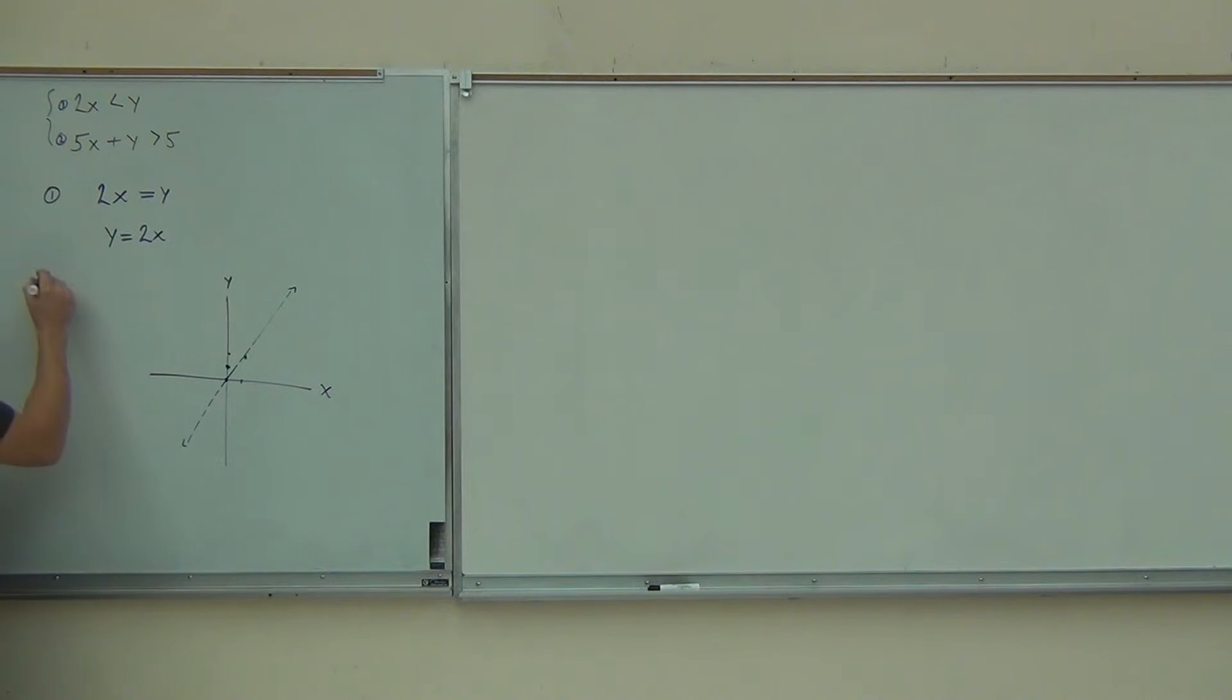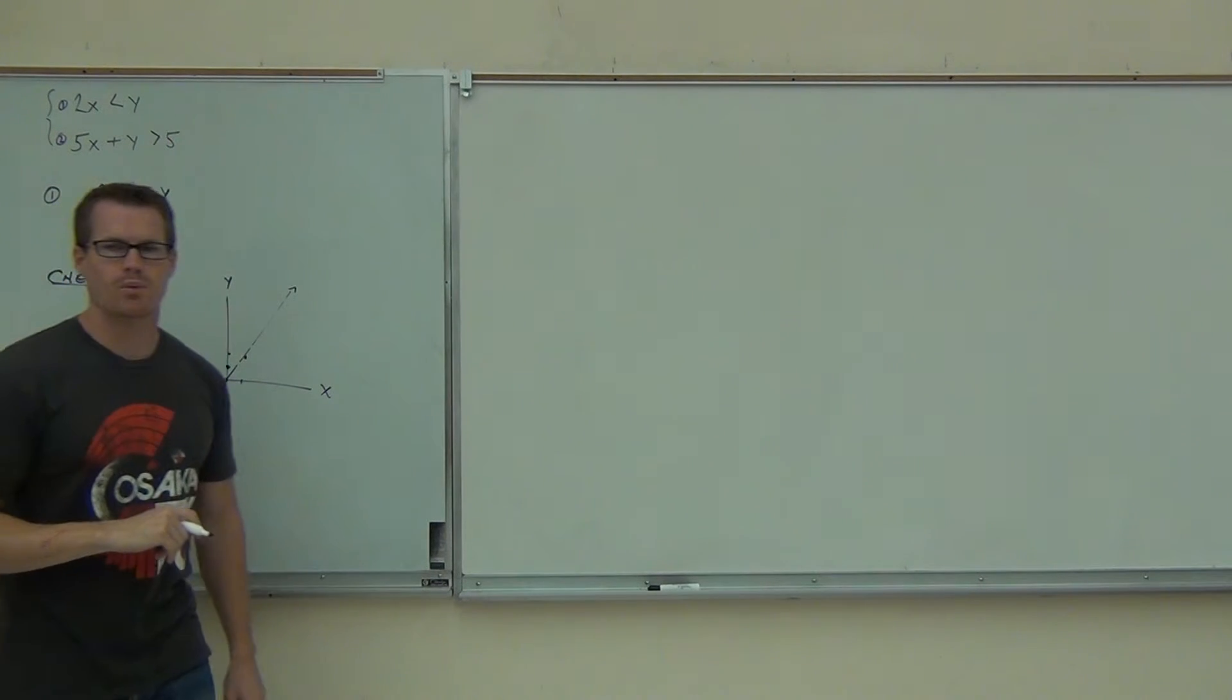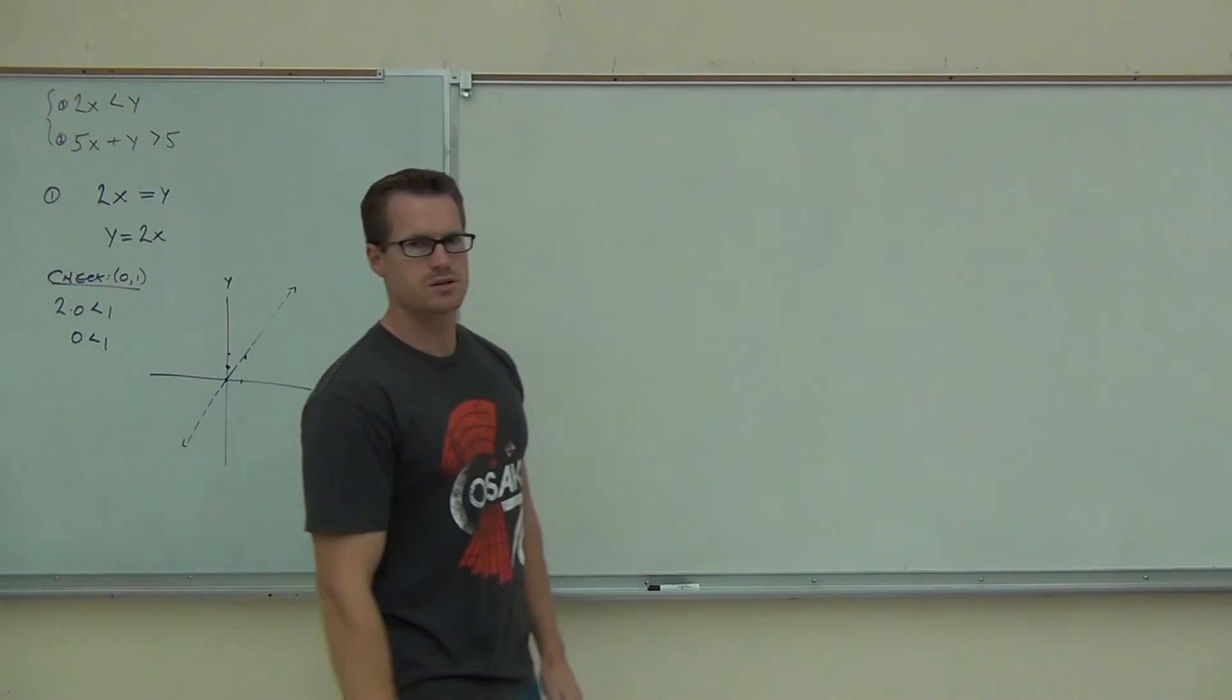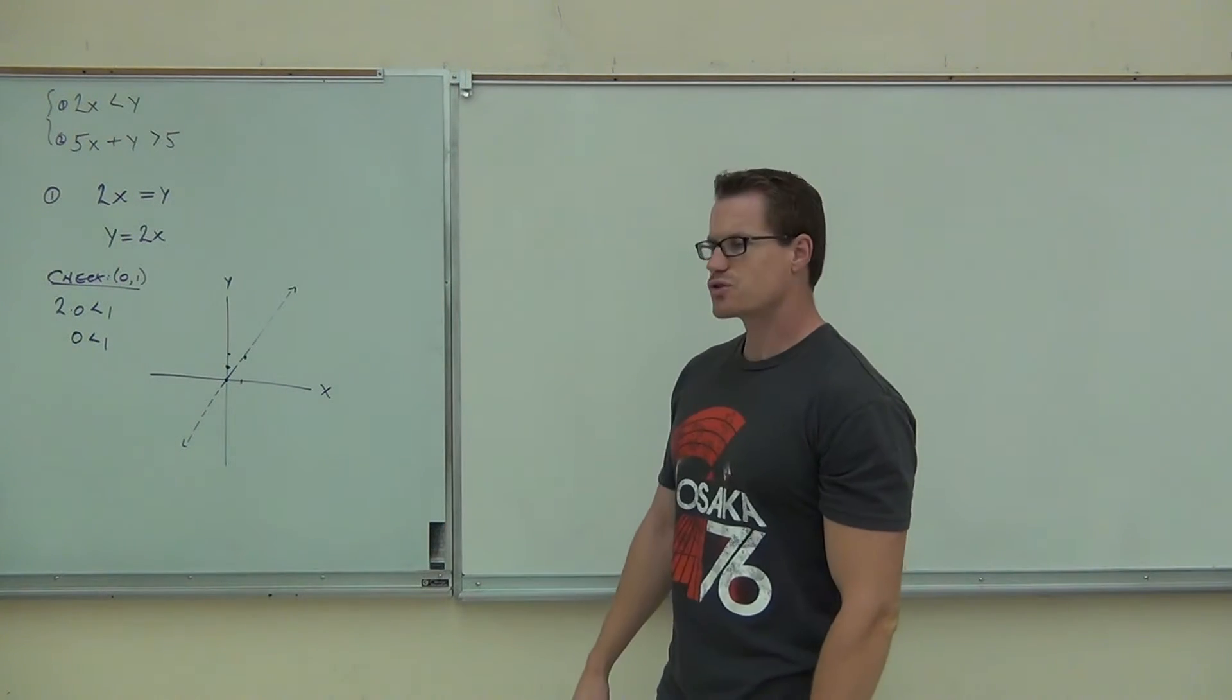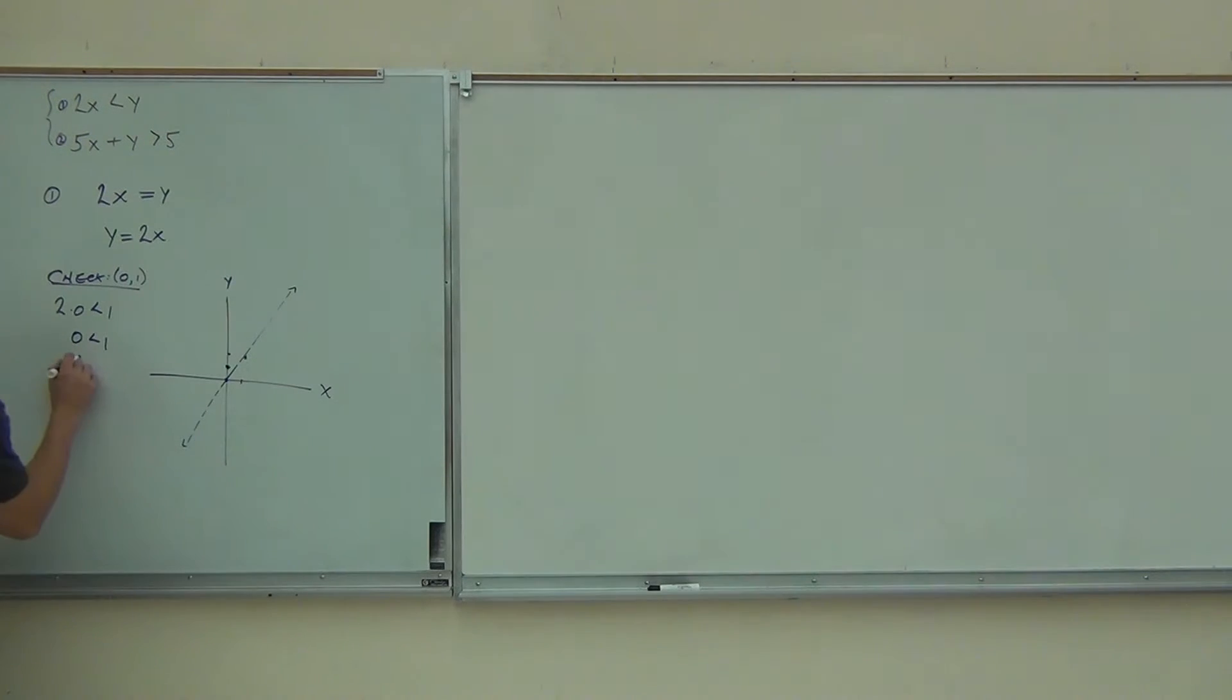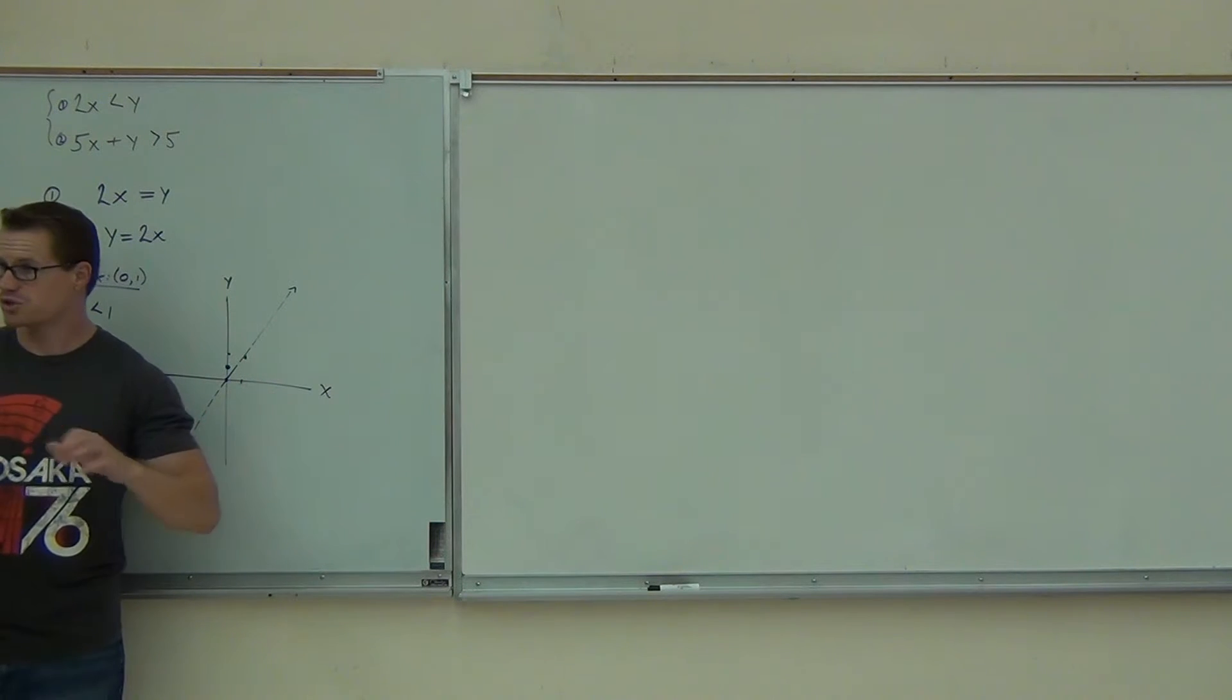So we'll check zero, one. That means zero for x, one for y. And we check that back in our original inequality. So that's two times zero less than one. Two times zero less than one, we've got zero is less than one. Zero is less than one. Is that true or is that false? Make sure you're identifying the point that you're checking. Make sure you know what that is.